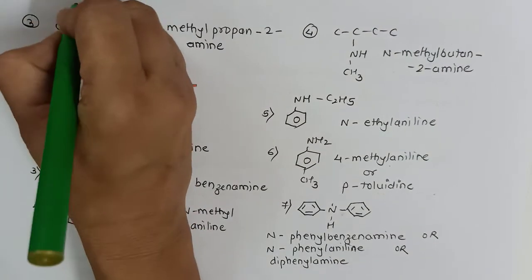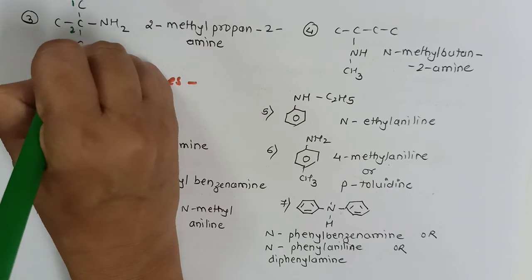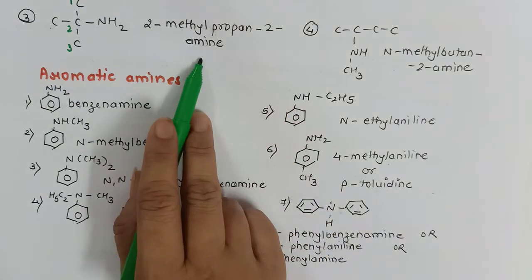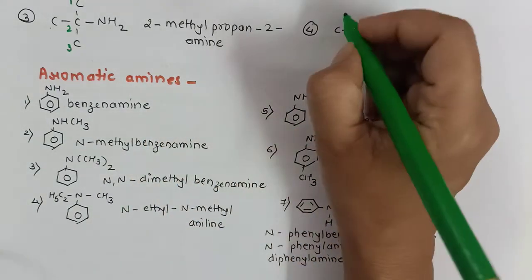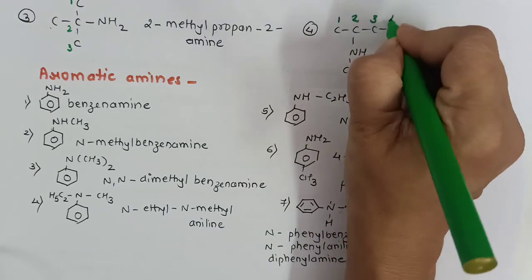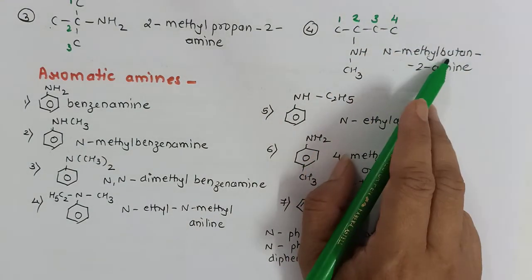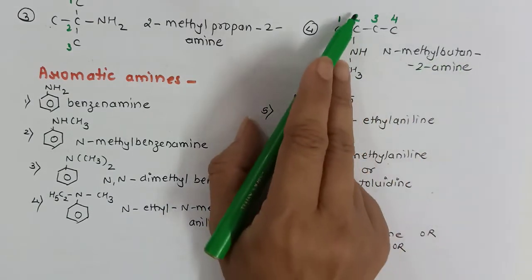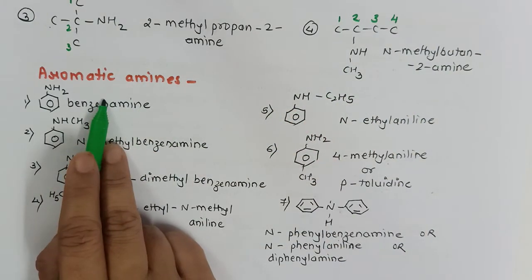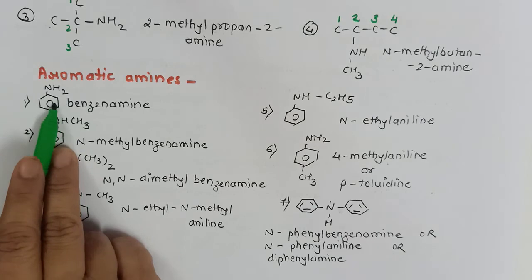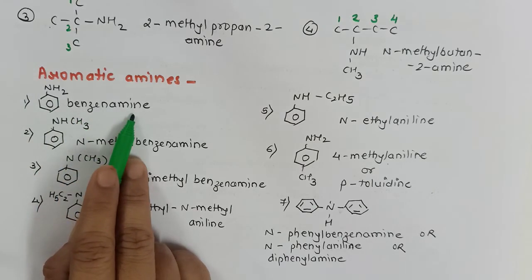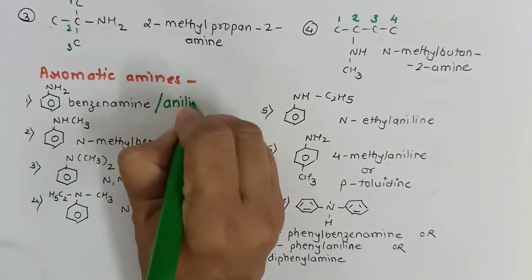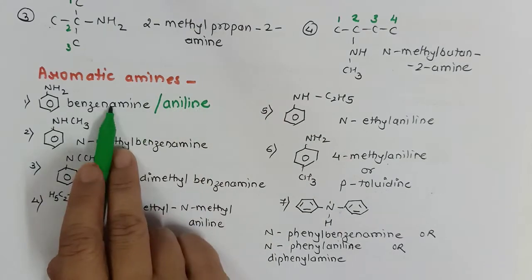With numbering 1, 2, 3, the next example is 2-methylpropane-2-amine. Taking the longest chain as the parent hydrocarbon — butane — with methyl attached to nitrogen, it becomes N-methyl-butane-2-amine. For aromatic amines, the basic amine is benzenamine, though the most commonly used name is aniline. Both answers are accepted.